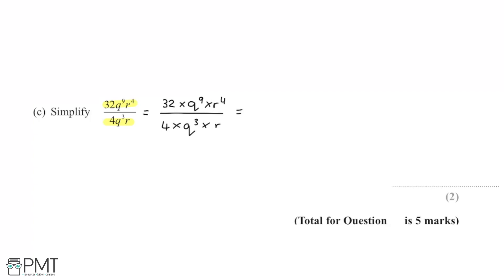Because all terms in the numerator and denominator are multiplied, we can separate them to make things easier. Separating the integers, we take 32 over 4 as its own fraction, then multiply by q to the 9 over q to the 3 to keep the q terms together, and then multiply by r to the 4 over r. This shows how we're going to work with the fraction, and it's useful to see how the terms interact.